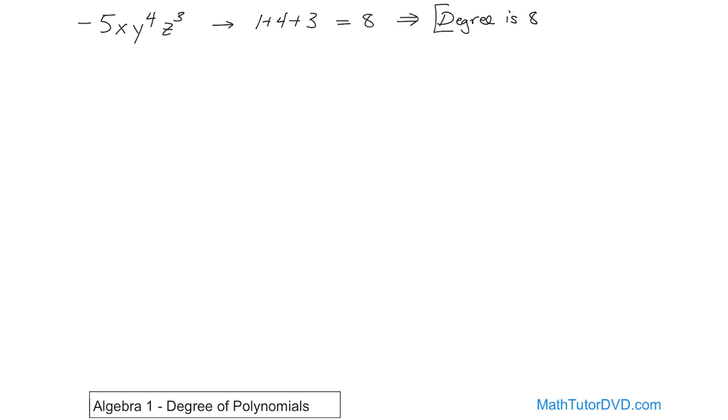It's easy in this case because there's really only one term. When there's only one term like this, you just add the exponents up, and that is what we call the degree.